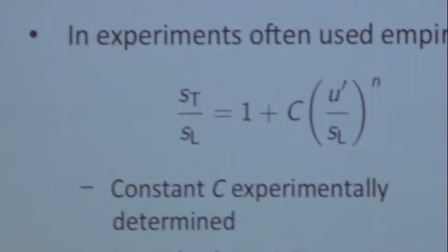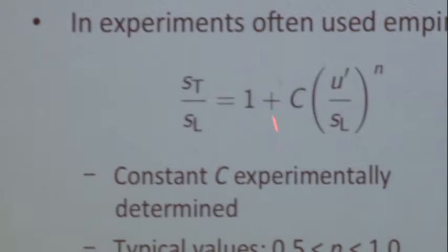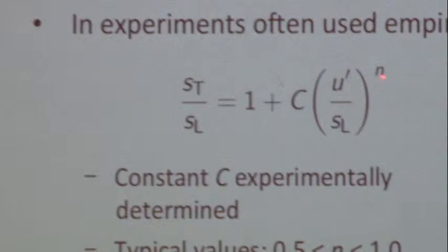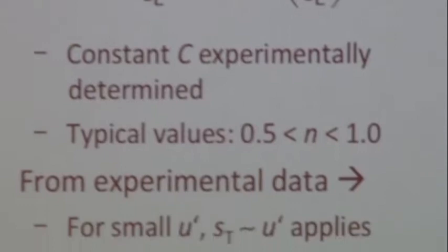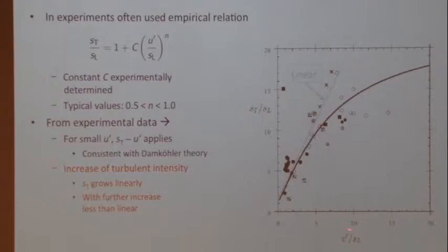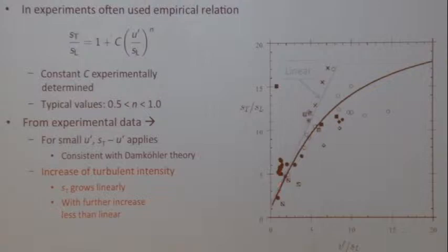There is a lot of scatter in these experiments. These are from different experiments — possibly from Derek Bradley's group in Leeds using a spherical combustion chamber, and from Princeton. The scatter occurs because these models assume equilibrium turbulence, but when you ignite a small flame kernel, it's not turbulent yet and initial conditions are not well-controlled.